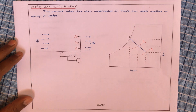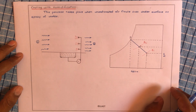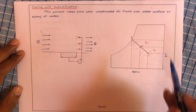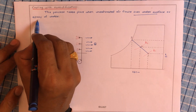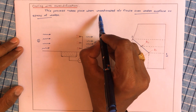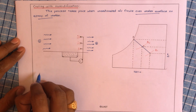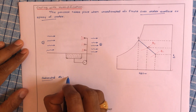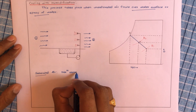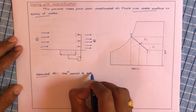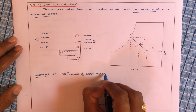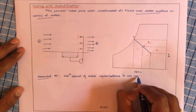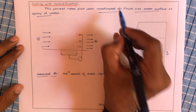Now let us start with our seventh process, that is cooling with humidification. This process takes place when unsaturated air flows over a water surface or a spray of water. We have already studied what is saturated air and what is unsaturated air. Saturated air is nothing but the maximum amount of water vapors, or moisture, that air can carry. Unsaturated air means the air has not yet reached that maximum moisture capacity.